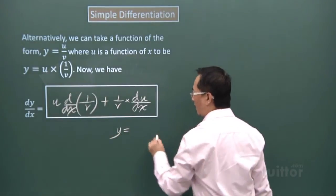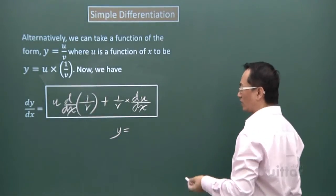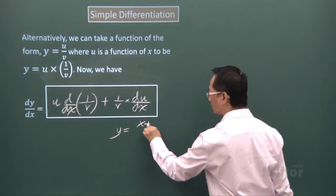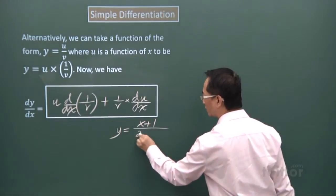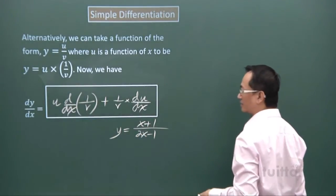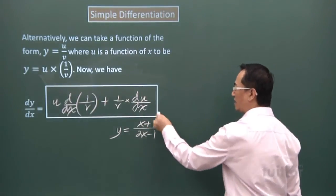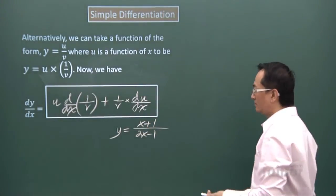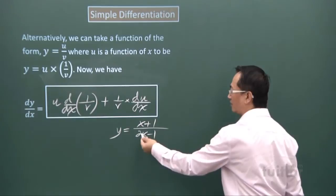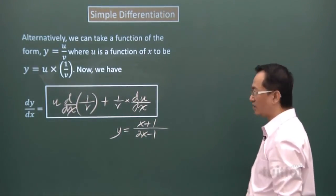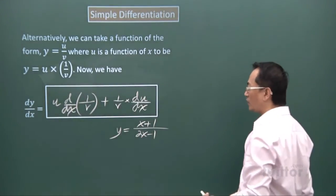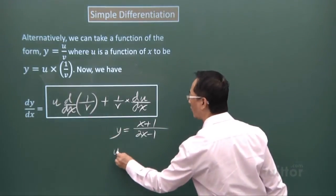You may have this kind: y equals x plus 1 over 2x minus 1. This expression is a quotient, you have a numerator divided by a denominator, or you can have something more complicated.